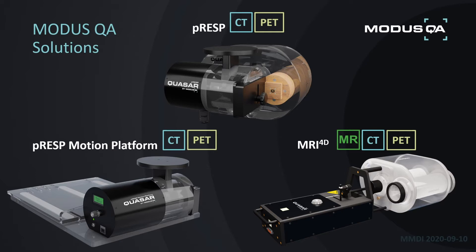The three main products I'm going to review today are: the PRESP, which is our Programmable Respiratory Phantom; the PRESP motion platform; and the MRI-4D. These three devices have been designed with physicists and major equipment manufacturers to perform multiple tasks, which I'll go over in more depth in the following slides.